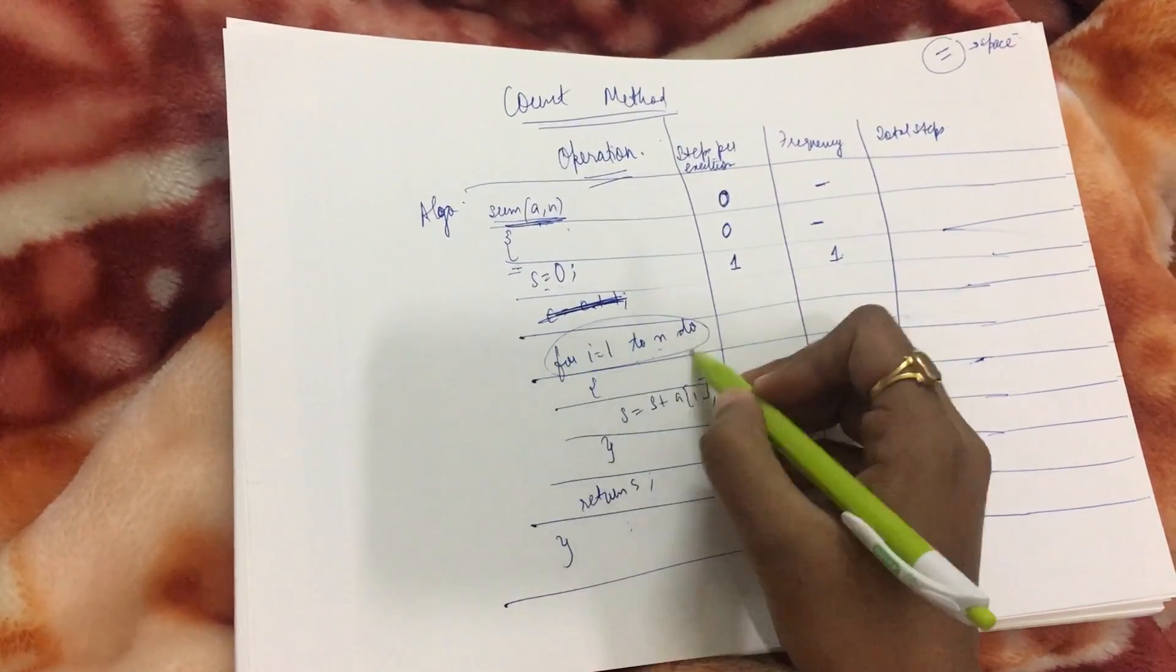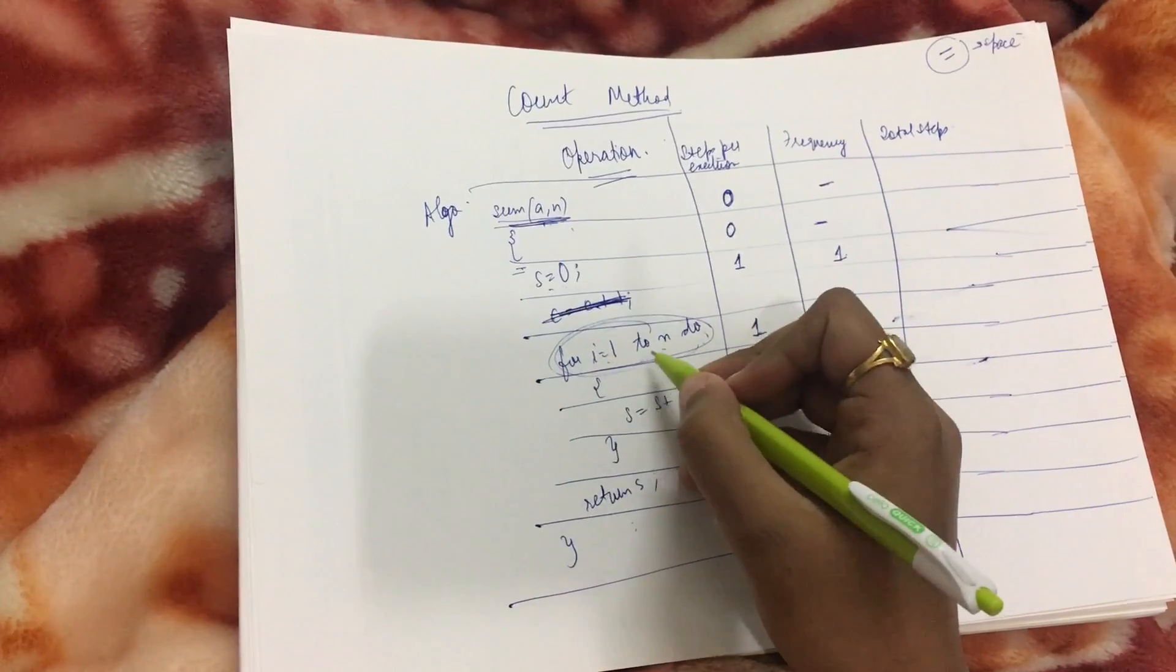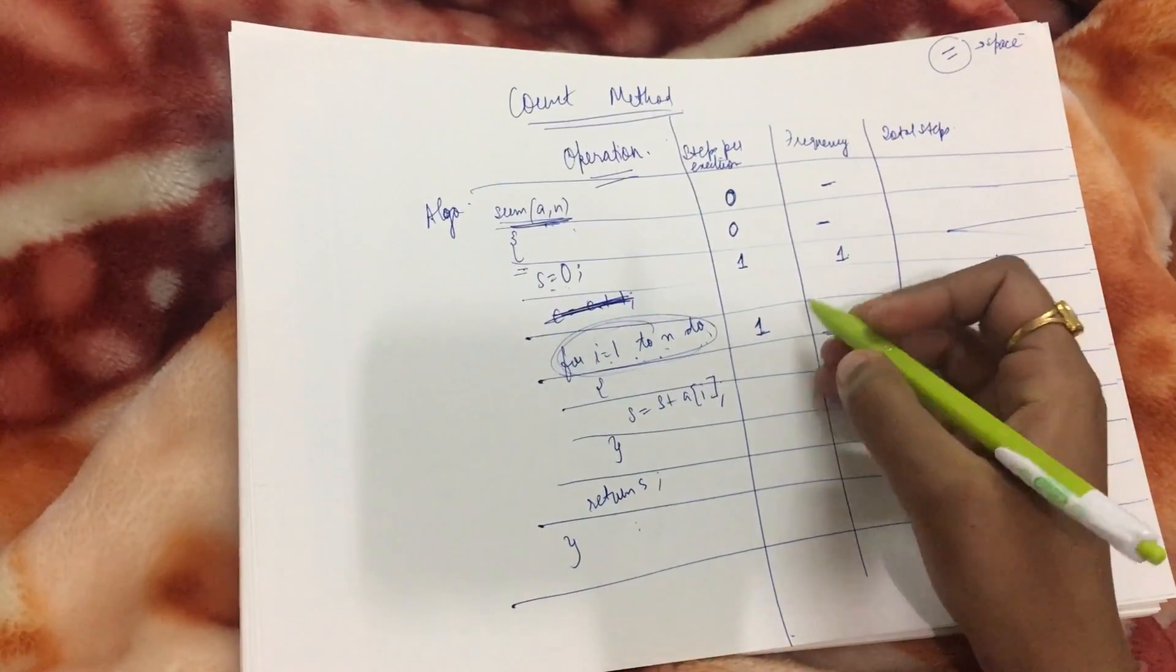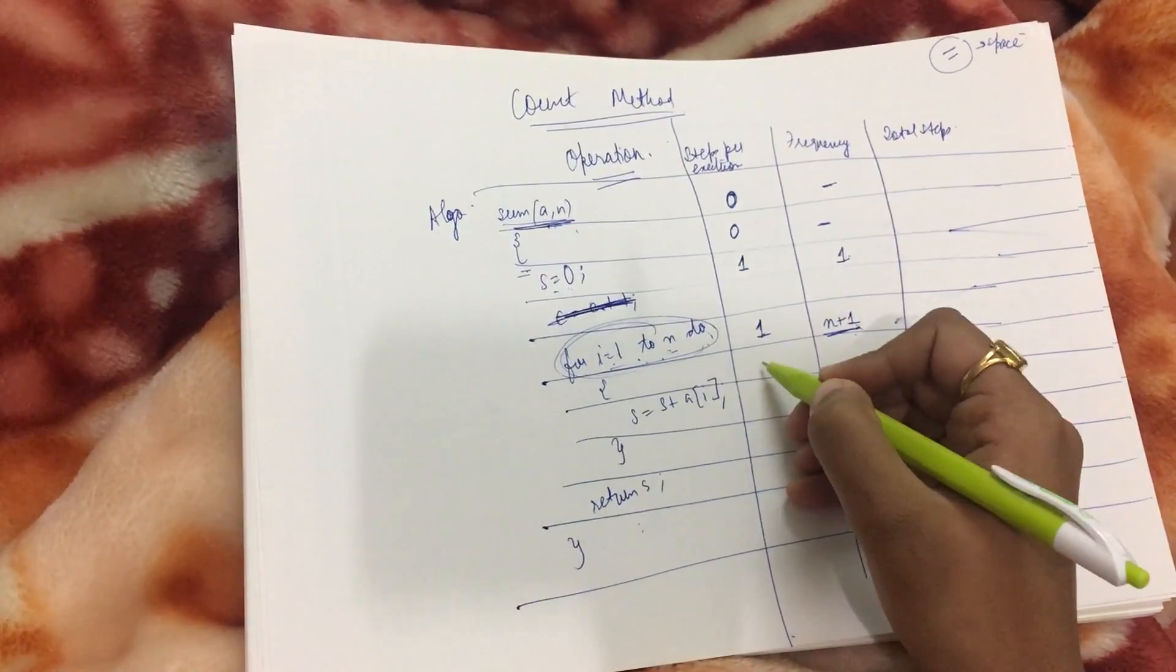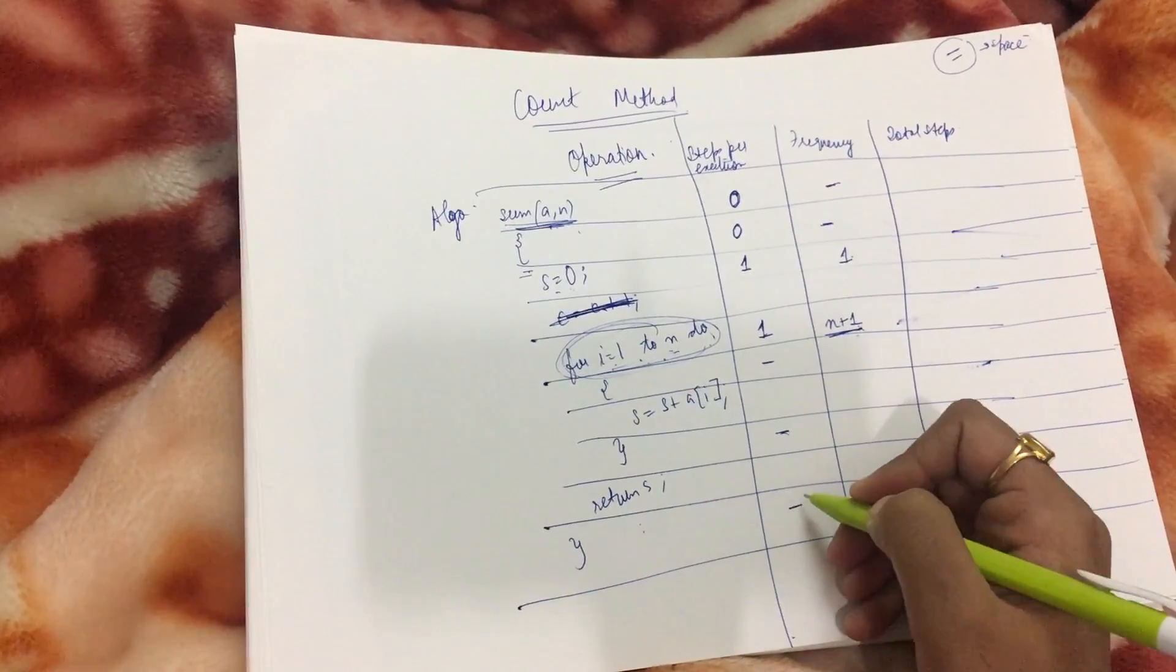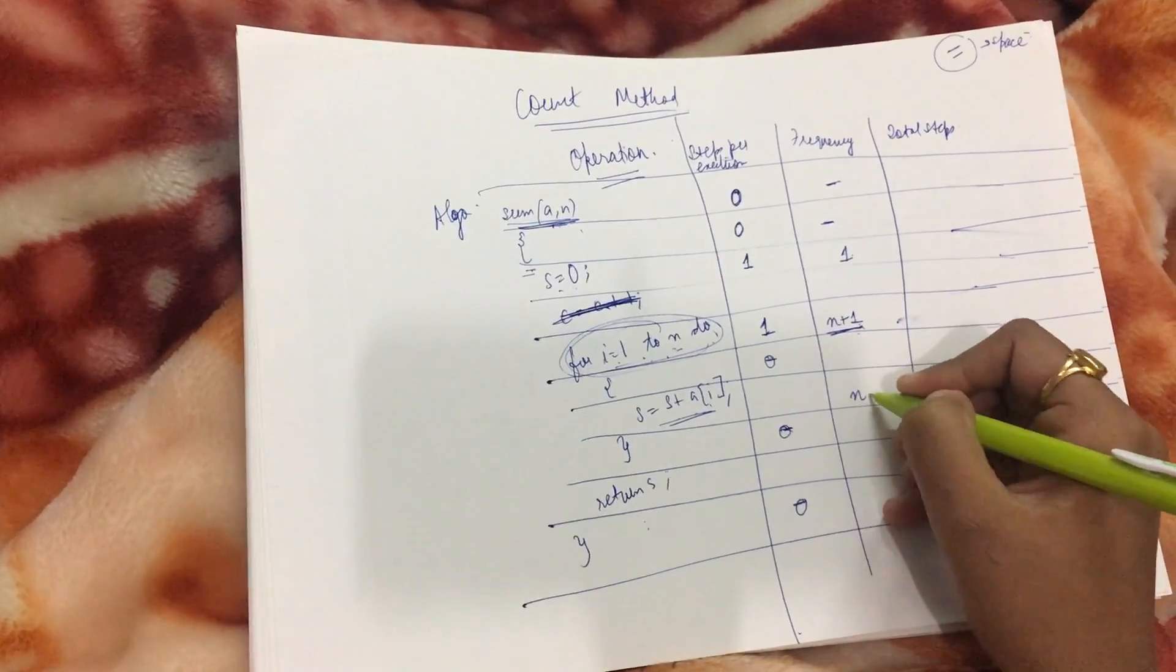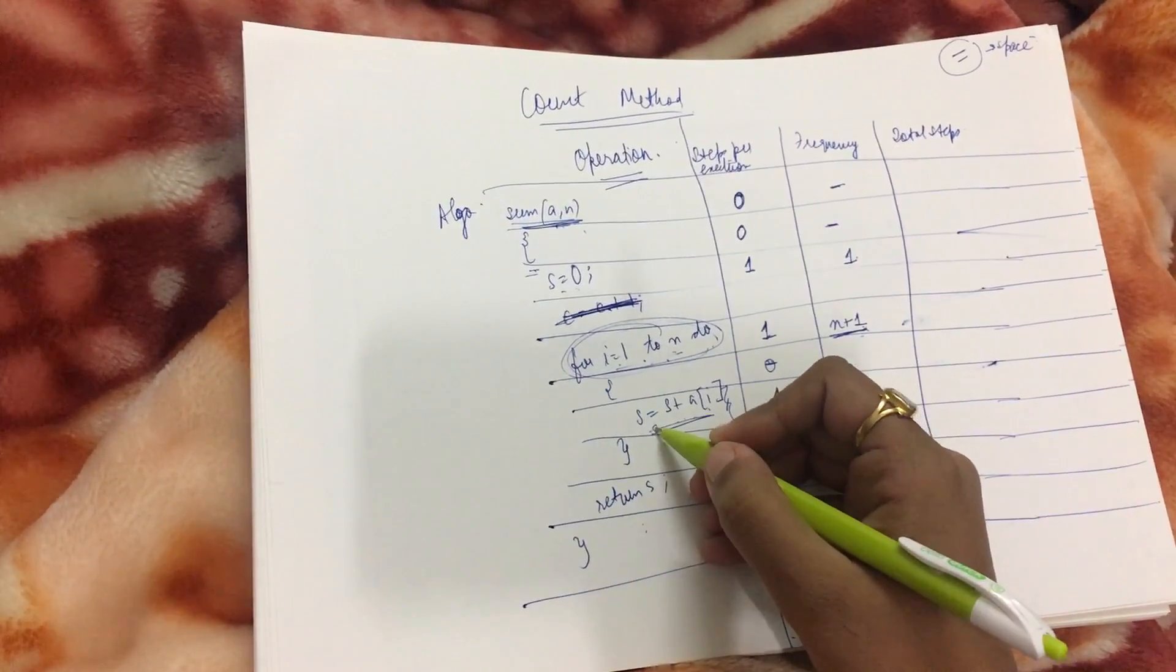For the for loop, one step, that is for i equals 1, only one step is there. But it is executing n plus 1 number of times, as we discussed in the space complexity example. The number of steps is 1, but it is executing n plus 1 times. Here no execution for the brackets. This step is occurring n number of times with one step. Suppose here we had another statement like cout a[i], then I would have written two for the number of steps and the frequency was n. But here I have one statement, so one step, frequency is n.